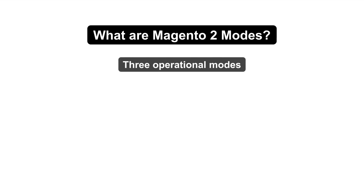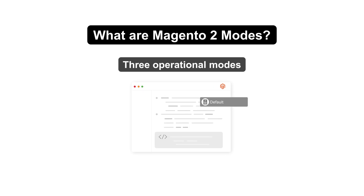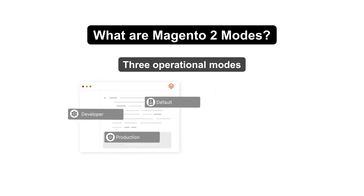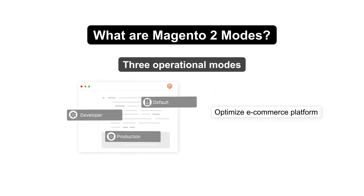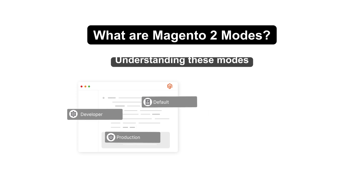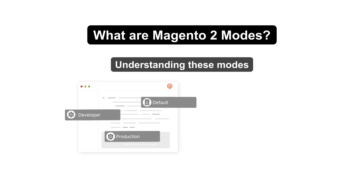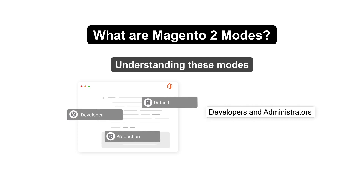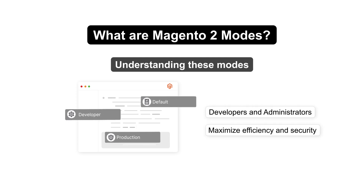Magento 2 offers three operational modes — default, developer, and production — each designed to optimize the e-commerce platform for different environments. Understanding these modes is important for developers and administrators to maximize efficiency and security.